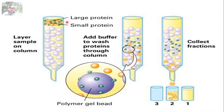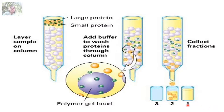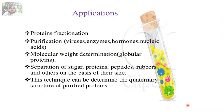When a sample containing large and small proteins is loaded and buffer is added to wash them through the column, the larger ones move between the beads and elute first. You collect a series of fractions and check for the protein of interest that you want to isolate.